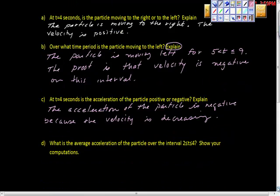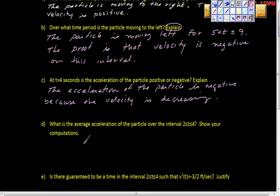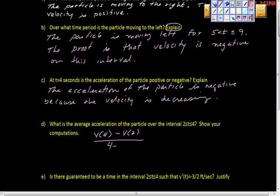We're giving full answers — answering the question and providing the explanation. Next: what is the average acceleration of the particle for t between two and four? We go back to the graph and do a little division: v(4) minus v(2), all over four minus two. Looking at the graph, that's six minus nine over four minus two, which is negative three over two. The unit is feet per second over seconds.